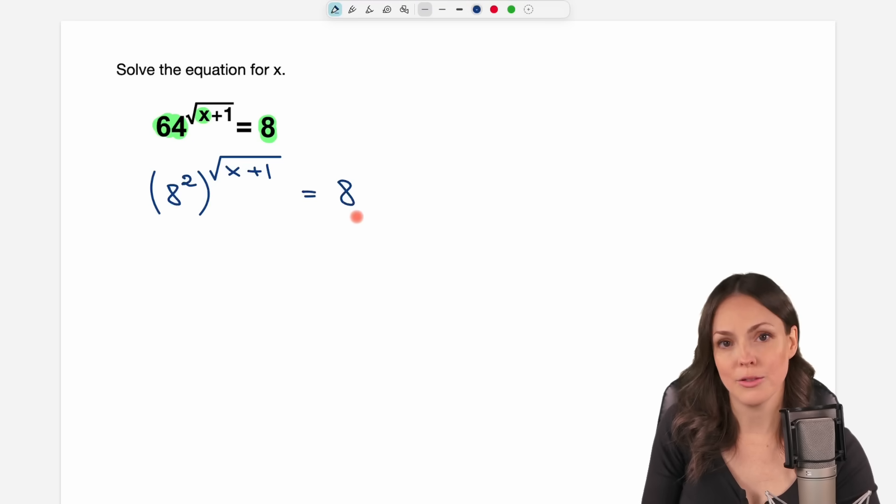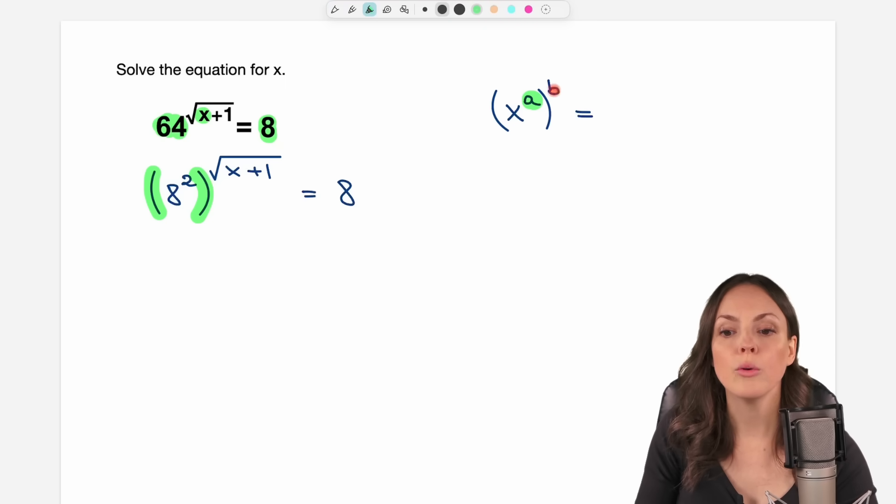Now if I compare the two sides, I have an 8 here and an 8 here. The problem on the left side is I still have these parentheses, but there's a rule how to get rid of them. If you have x to the power of a and all of this to the power of b, then you're allowed to multiply these two exponents. You take your base, the x, and then multiply a times b.